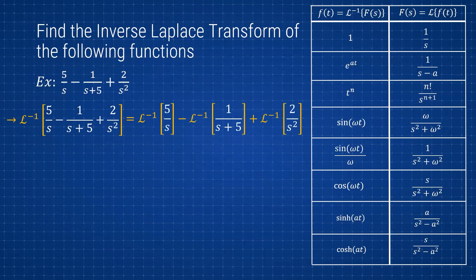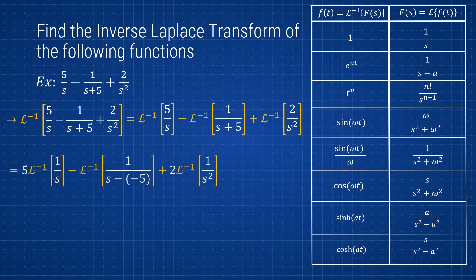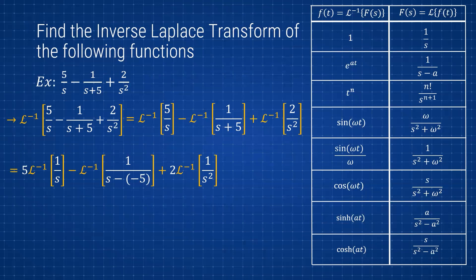Just like with the Laplace transform, we can factor out the coefficients. For the first term we have 5 times the inverse Laplace of 1/(s minus negative 5). We had s+5 before, but because the table only has s minus a, that number must be negative. Then for the last term we have plus 2 times the inverse Laplace of 1/s².